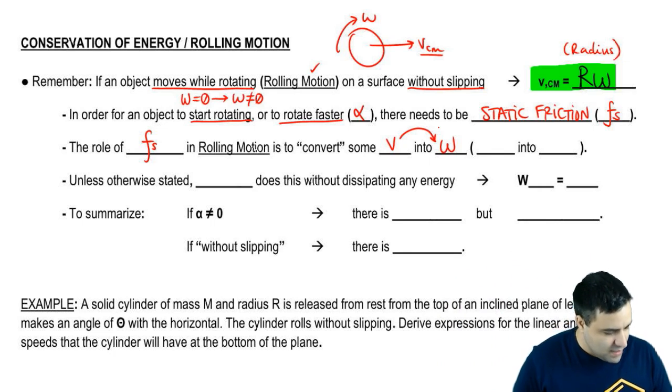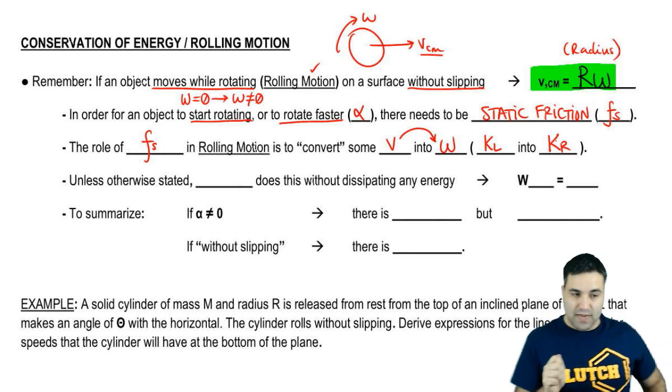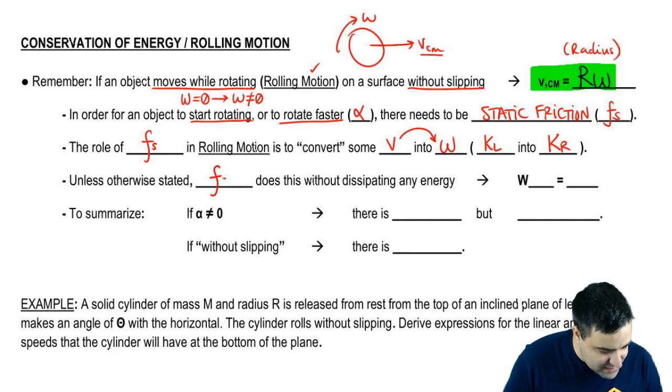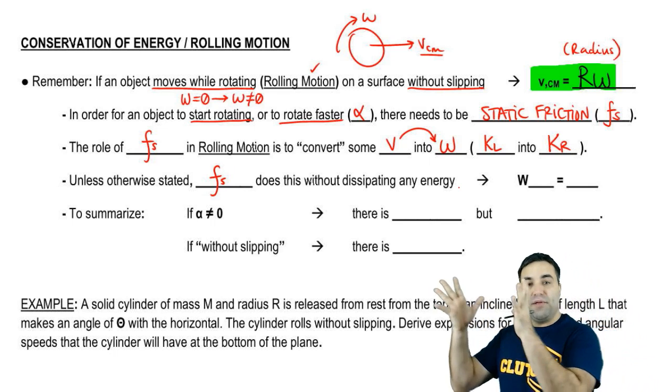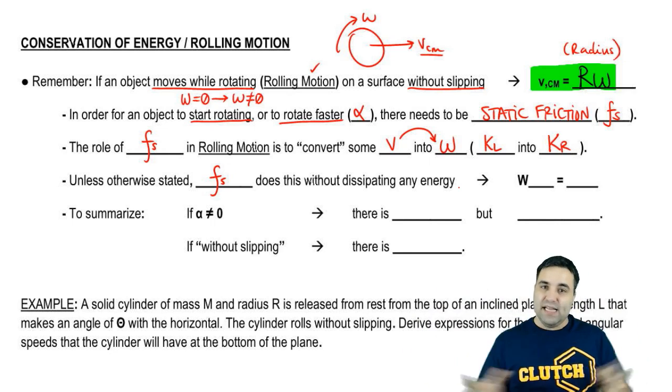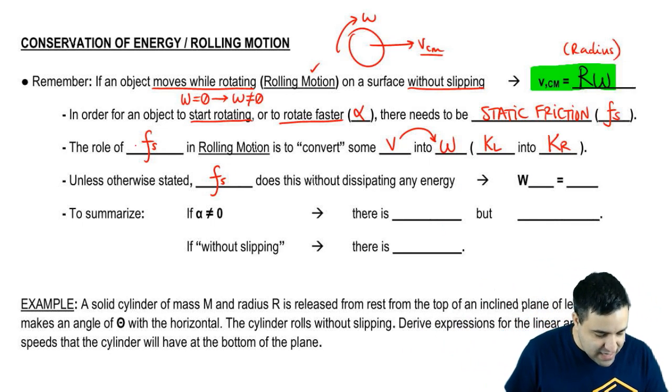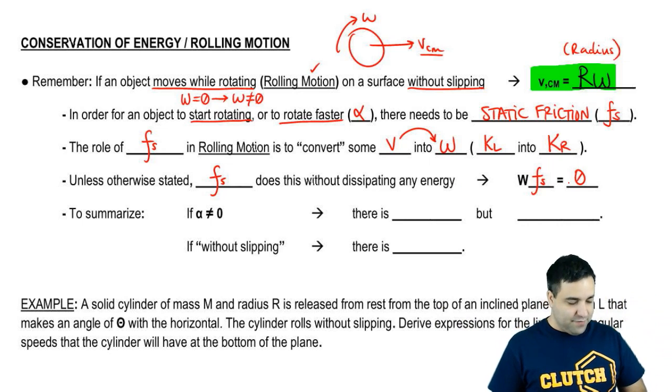So it's taking some V and changing into omega. Technically what it's doing is getting some linear kinetic energy and converting it into rotational kinetic energy. That being said, friction static does that without dissipating any energy because you're converting from kinetic to kinetic, so it stays within mechanical energy. So we're going to say that even though there is static friction, the work done by static friction is zero.